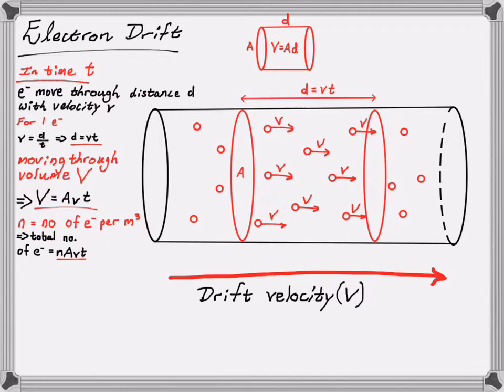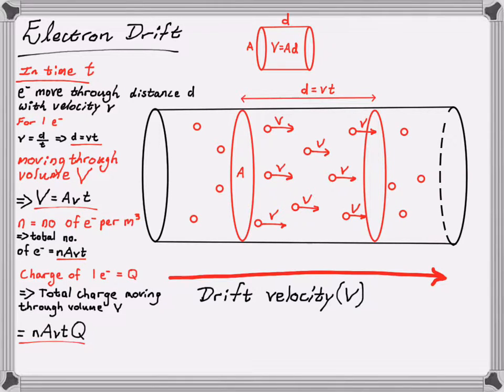Now if we take the charge on any one of these electrons, we're just going to define that as Q. So the charge of any one electron is equal to Q. So how much total charge is moving through? Well, how many electrons do we have? We already said that that value is equal to N A V T. Therefore, the total amount of charge moving through this section of the conductor will equal N A V T times Q. So that gives us the total charge.